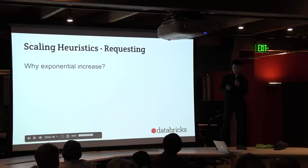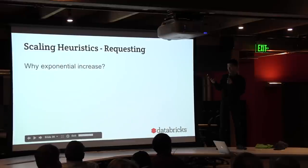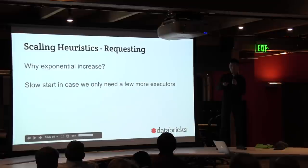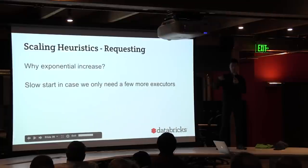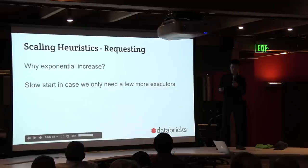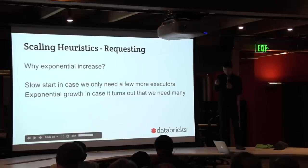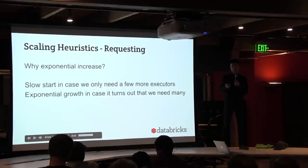Why choose an exponential increase model? It's similar to why TCP uses slow start. When you only need one or two extra executors, you don't want to ramp up immediately to as many resources as you can grab, because you might throw away most of them shortly after. A slow linear increase, on the other hand, might not get you to the number of resources you actually need fast enough. Exponential growth balances caution with responsiveness.